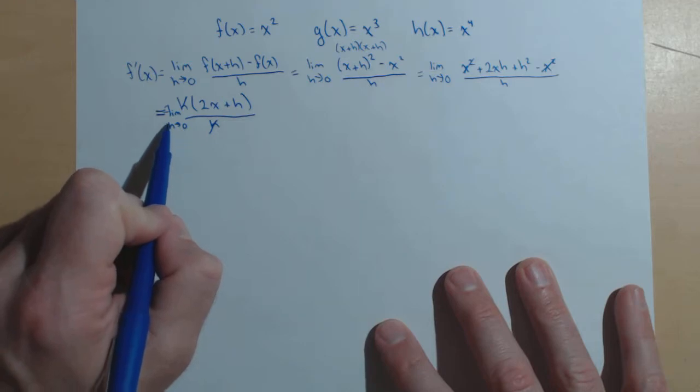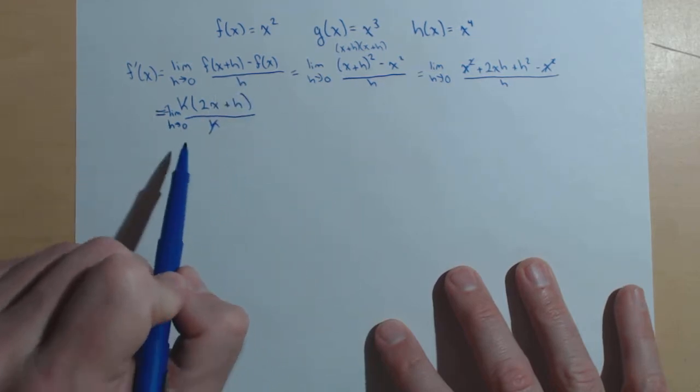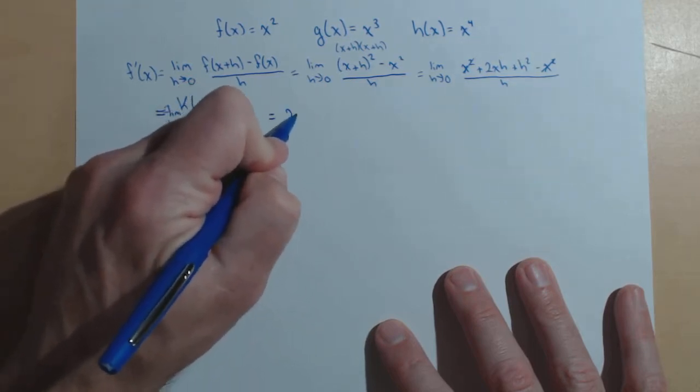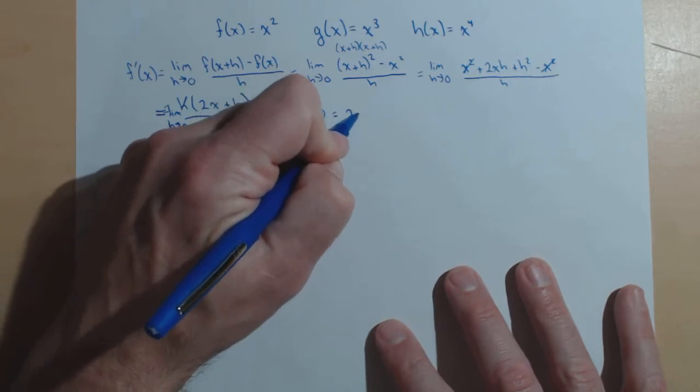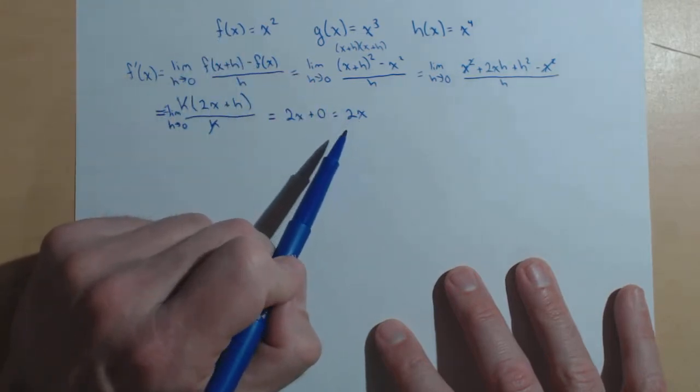Now, what happens is these h's will cancel, and now I can solve this limit by direct substitution. I couldn't before because it would have given me a zero in the denominator. So, plugging zero in for h, I get 2x plus zero, or 2x. So, if f of x is x squared, f prime of x is 2x.